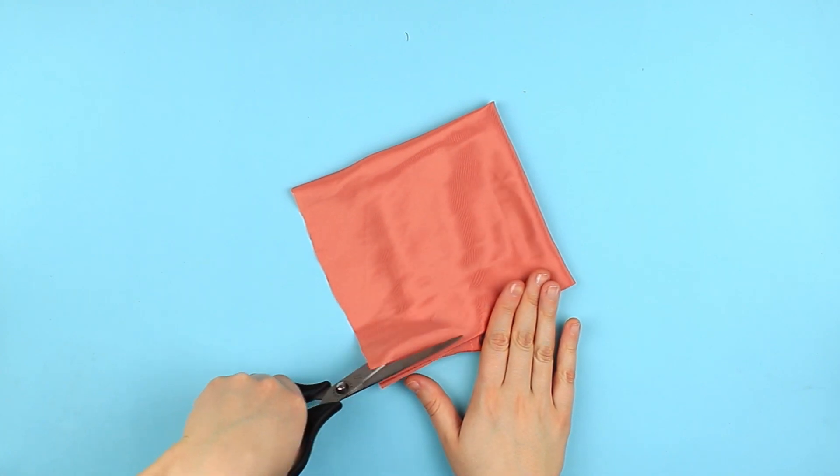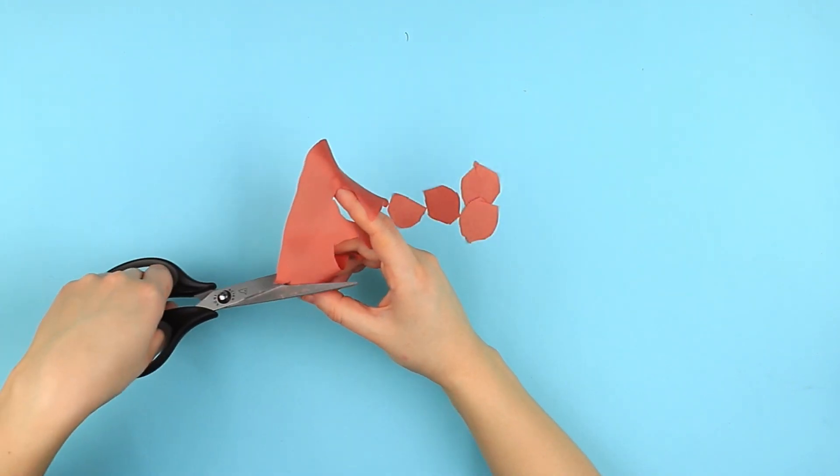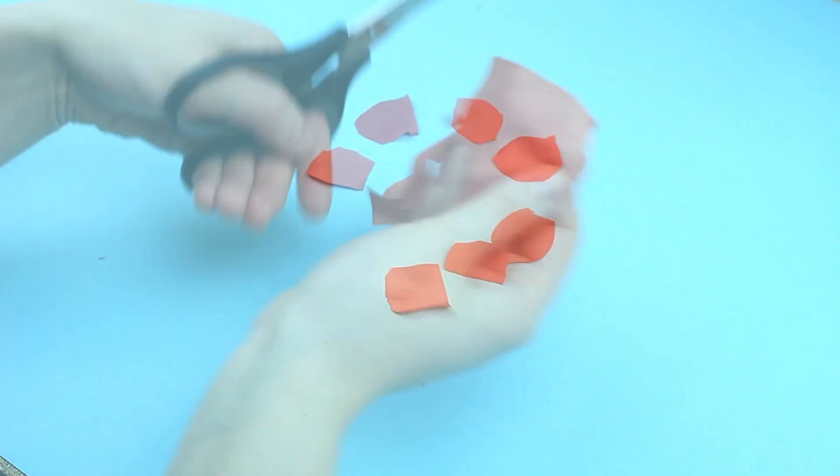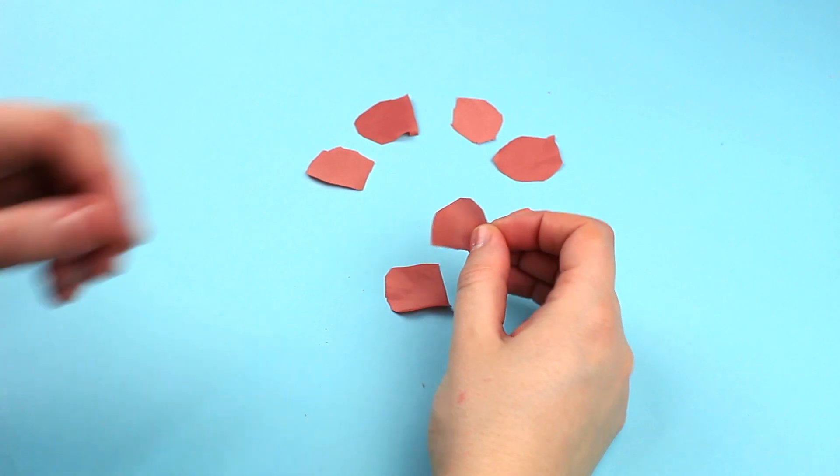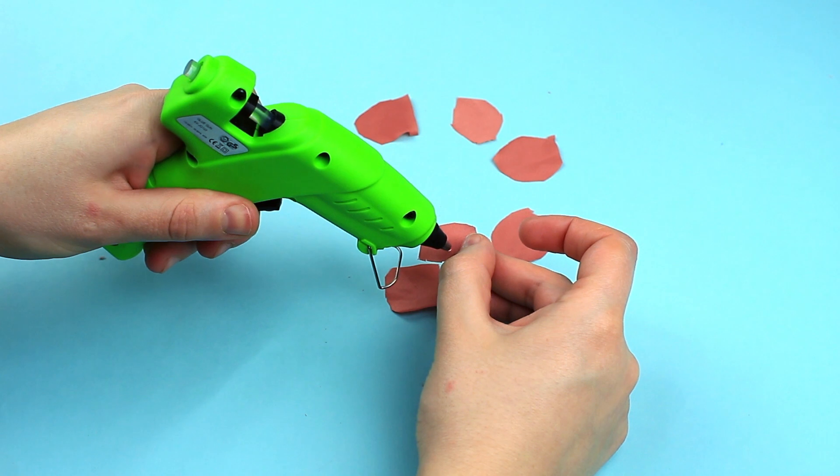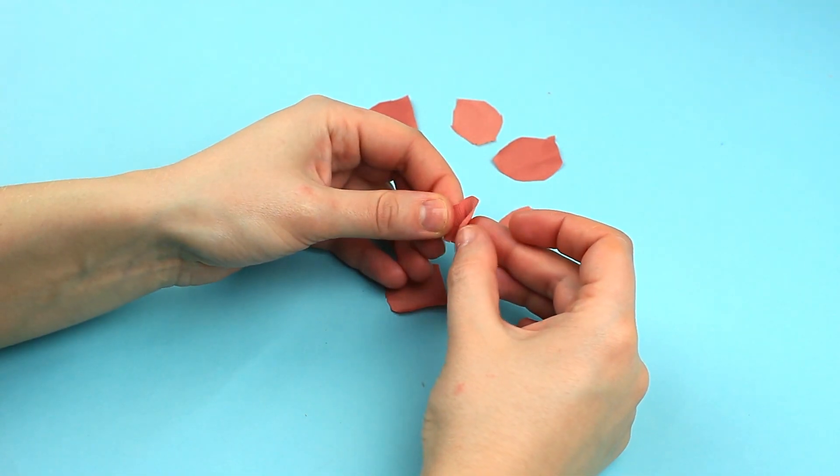Cut out several details shaped like rose petals. We'll need about 10 petals for the first flower. Add a drop of hot glue to the petal edge and roll up to form a rosebud.